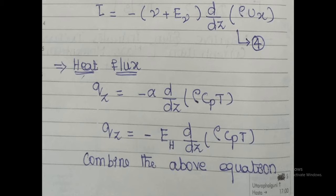For heat transfer, which law applies? Fourier's law of heat conduction, where heat flux is directly proportional to temperature gradient. The expression taken from viscous flow is: Qz equals minus alpha times d/dz(rho Cp T). This is the final expression for viscous flow, taken from the previous lecture.